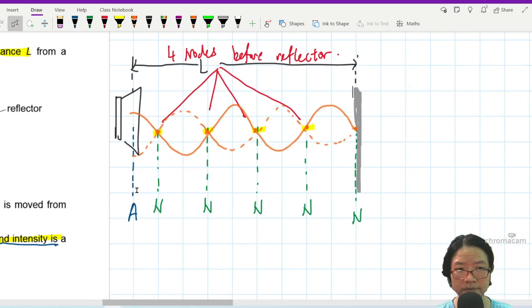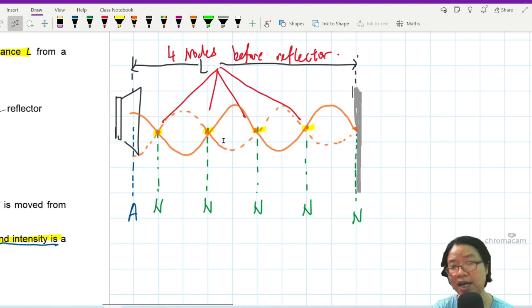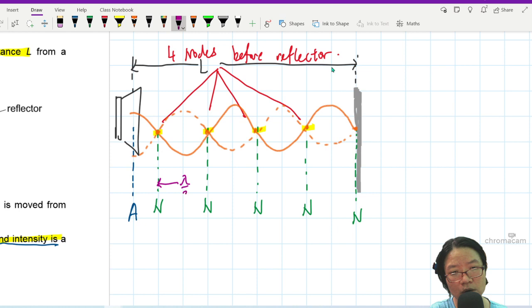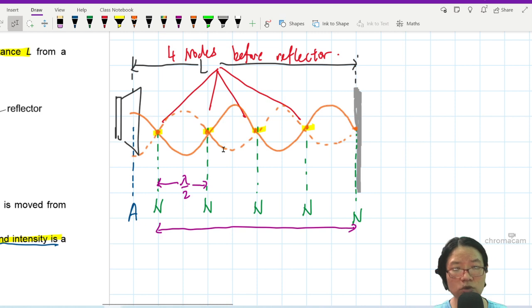So at the speaker, there's an anti-node. You find four nodes in between the speaker and the reflector, but not yet reach the reflector. So there's a fifth node here that you cannot detect because you cannot put the microphone at the position of the reflector. You can go close, but you probably cannot touch here. So four nodes before the reflector. And if I measure lambda, here to here is lambda over 2. Whenever you go from node to node, it's lambda over 2.